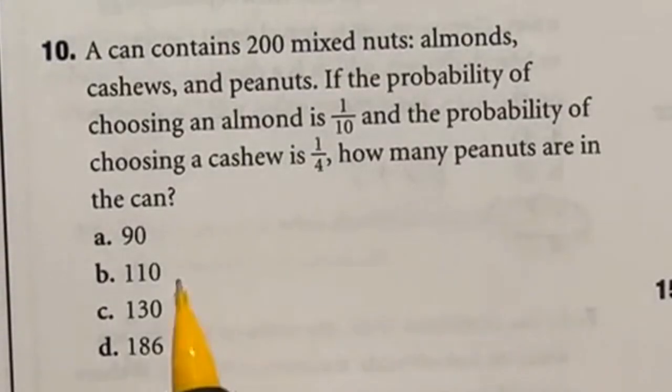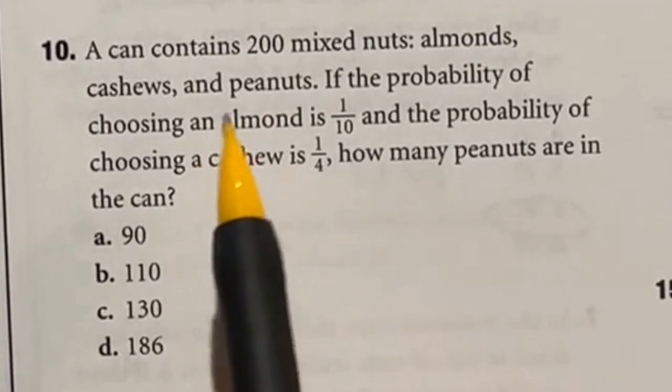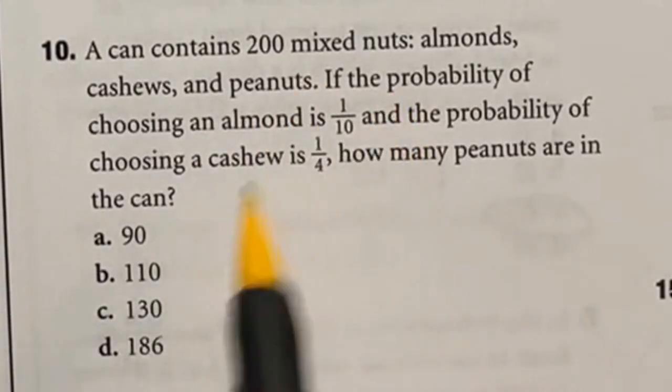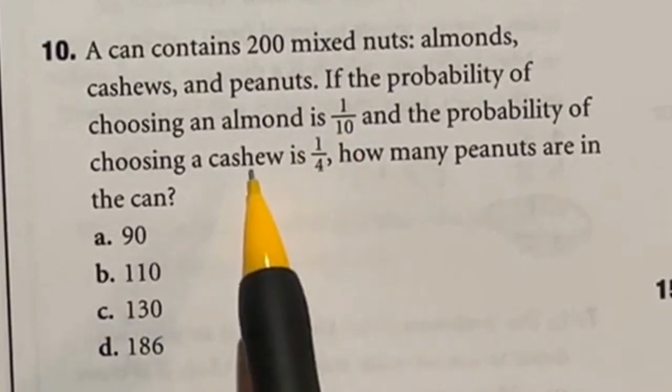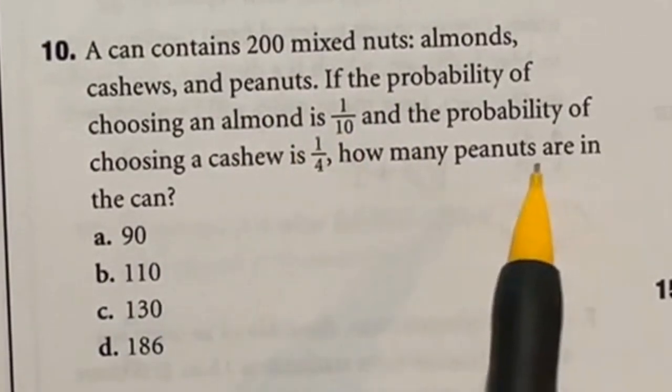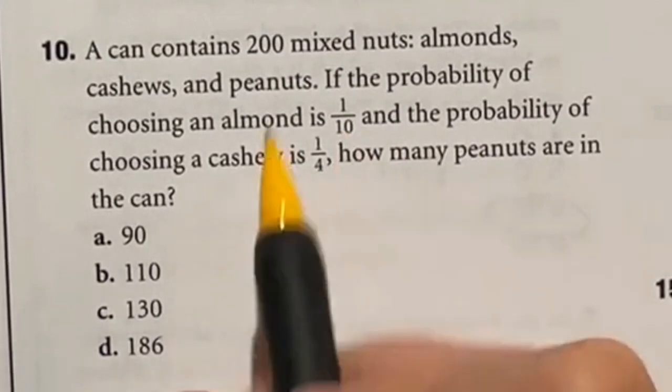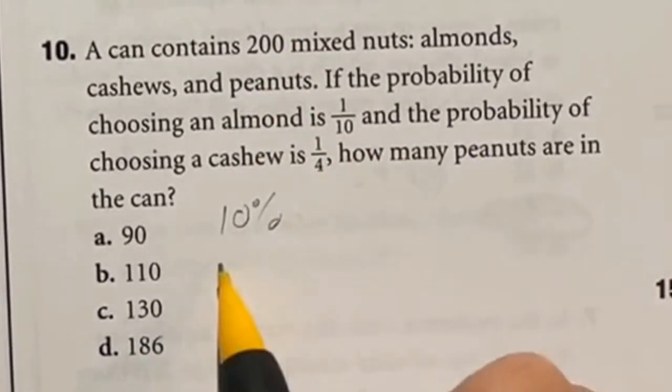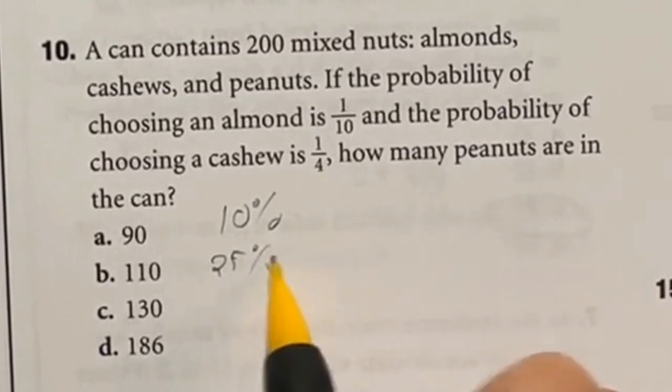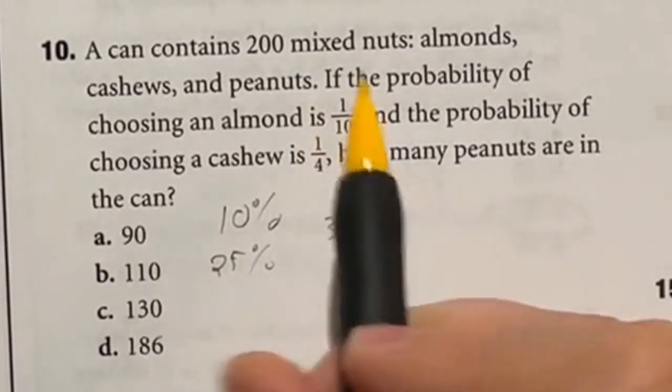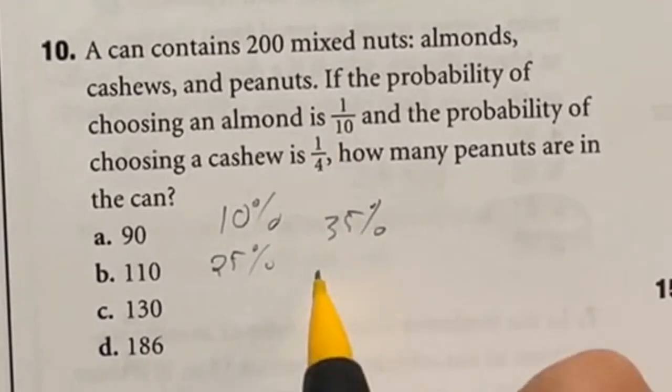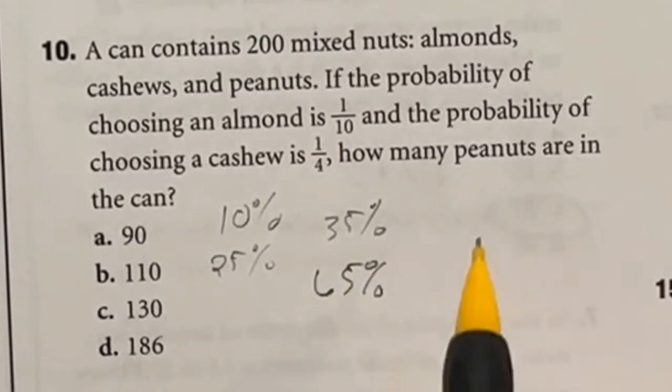So many different ways to do problem 10. Let's see if you choose the same way I do. It says that you have 200 mixed nuts in a container. One tenth of those are almonds and one fourth of those are cashews. So how many total peanuts are in the can? Well one tenth would be 10 percent and one fourth would be 25 percent. So altogether that's 35 percent. So 35 percent of the mixed nuts are accounted for which means 65 percent are going to be peanuts.